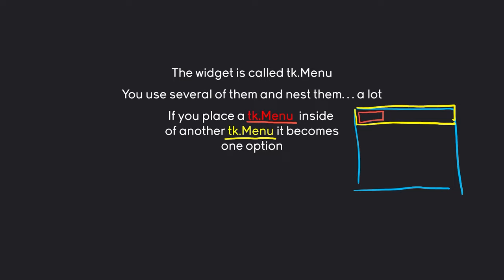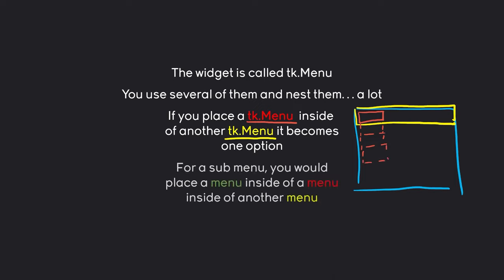The red menu can have a couple of extra options — actual items you can pick from. You could make this even more complex by placing a submenu inside a menu inside another menu. For this example, the main menu is the yellow one. Inside of that, we have a red submenu as one item. Inside that menu, we have another menu, and inside there, we could have other entries or even more menus. The system can get quite complicated, but once you understand the basic nesting principle, it really isn't too difficult.